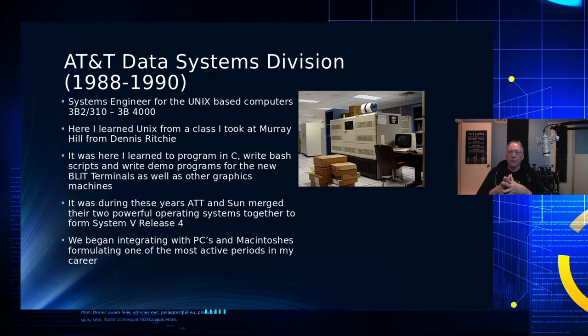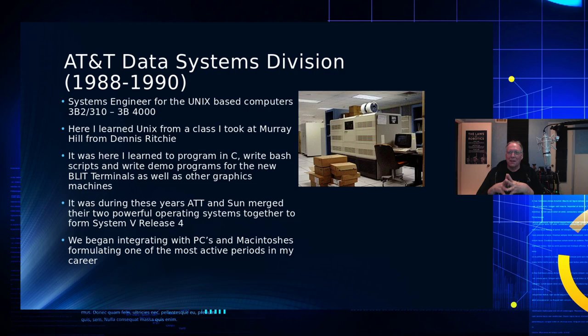During those years AT&T and Sun merged their versions of Unix together — Sun's SunOS, based on Berkeley's version of Unix, and AT&T System 5 — creating System 5 Release 4 with Open Look as the X11 graphical desktop. That particular step AT&T took split the entire Unix community because companies like HP, IBM, and DEC all went, 'They're going to own the entire industry and we can't let this happen.' Unix pretty much cratered after about 1992.